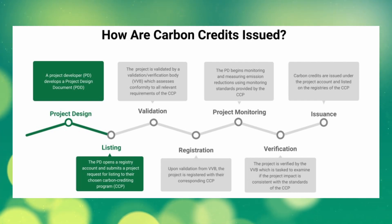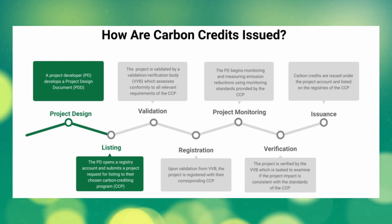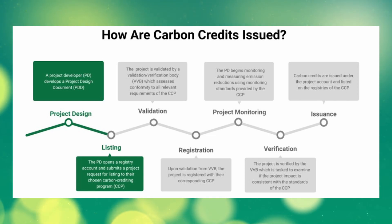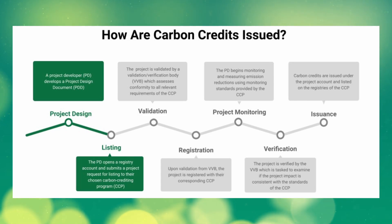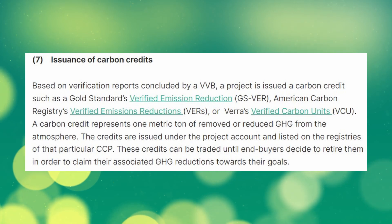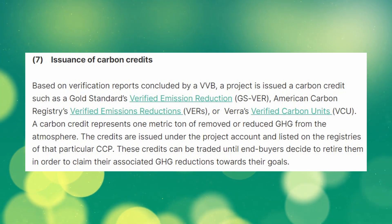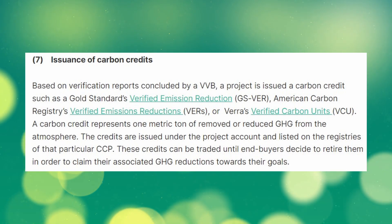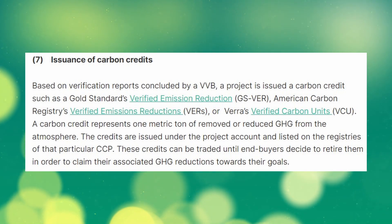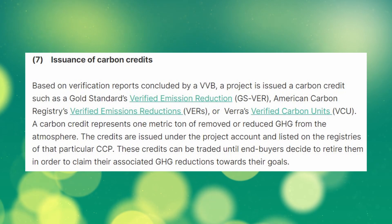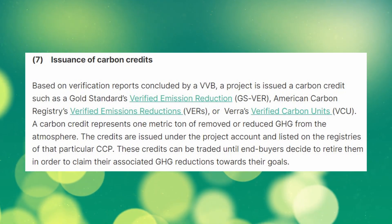After a certain period of time, this creates a monitoring report, which is reviewed again by the validation and verification body. If the reports are consistent with what the registry's standard outlines, then the project is verified, meaning it can officially start issuing carbon credits. To make it a little more confusing, some registries call their carbon credits different names — Gold Standard calls them verified emissions reductions, or VERs, and Verra calls them verified carbon units, or VCUs — but they're all the same thing, just from different registries.